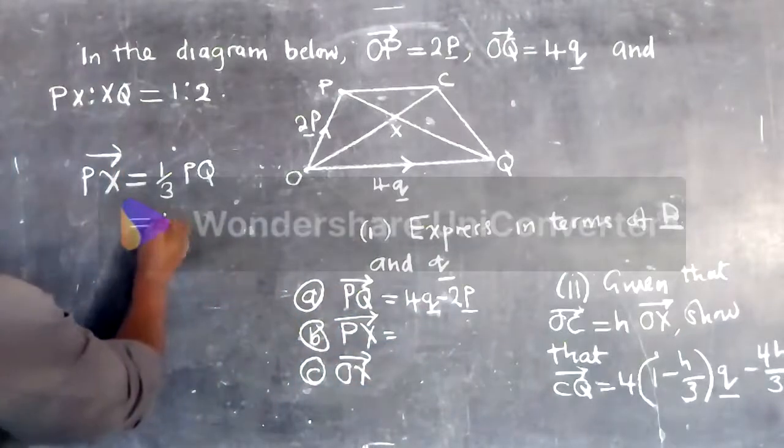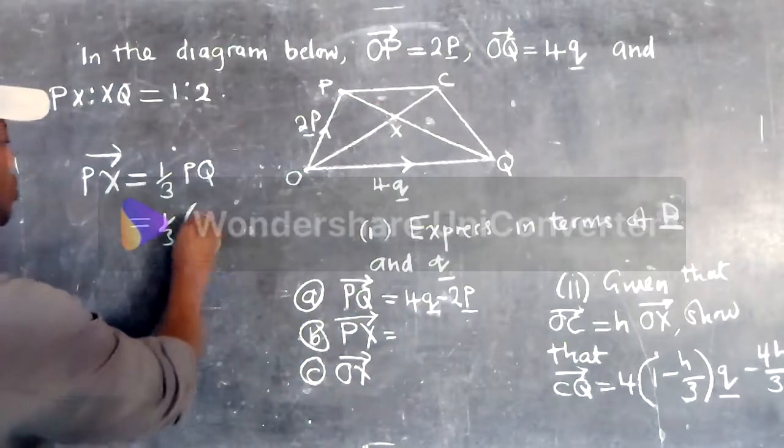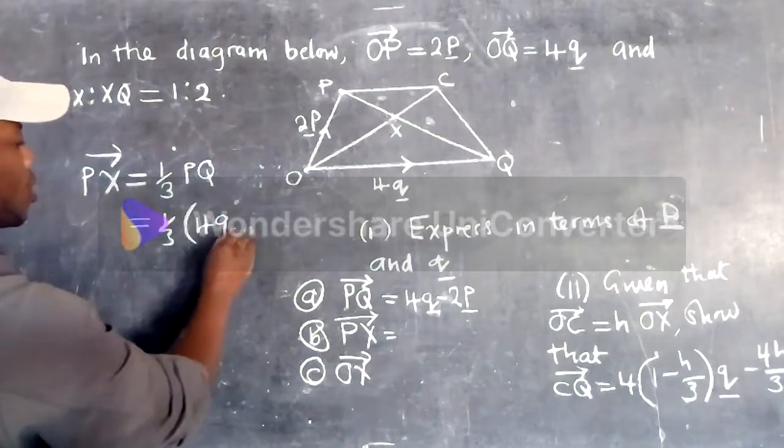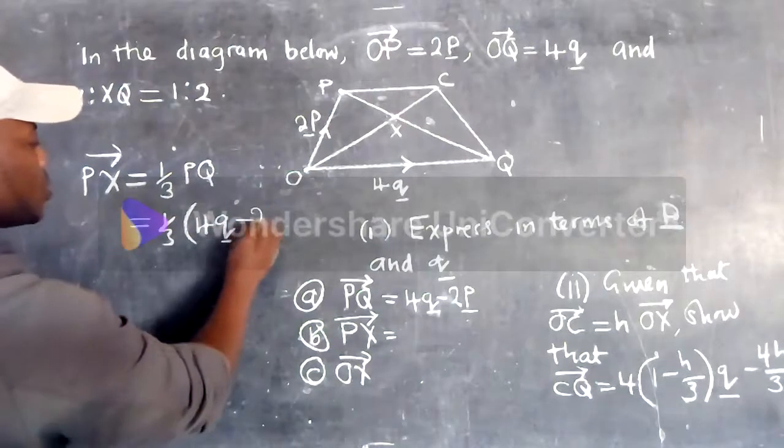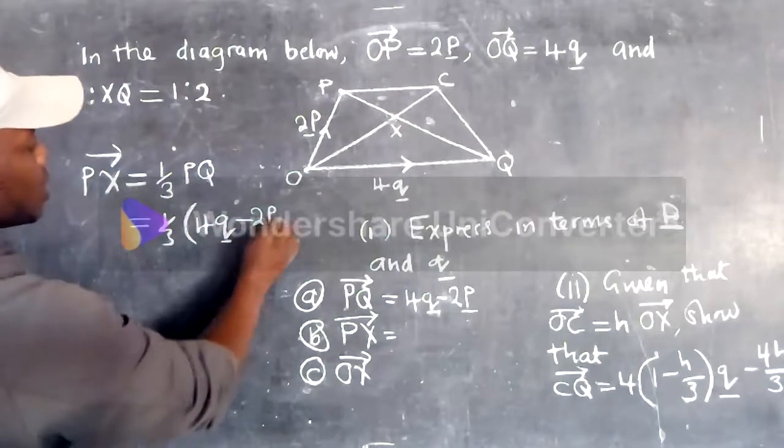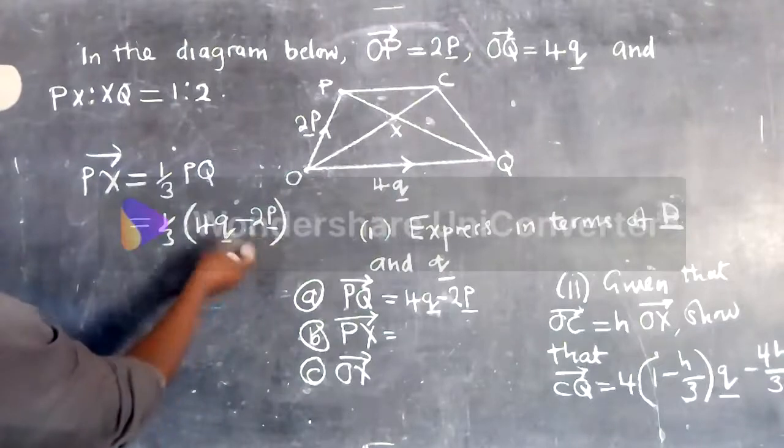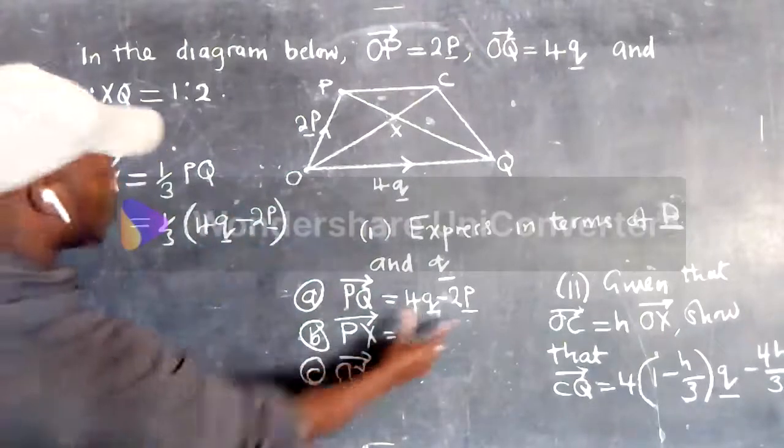It's over here. Our pq will be 4q minus 2p. So this is our pq. It's over here, we found it.